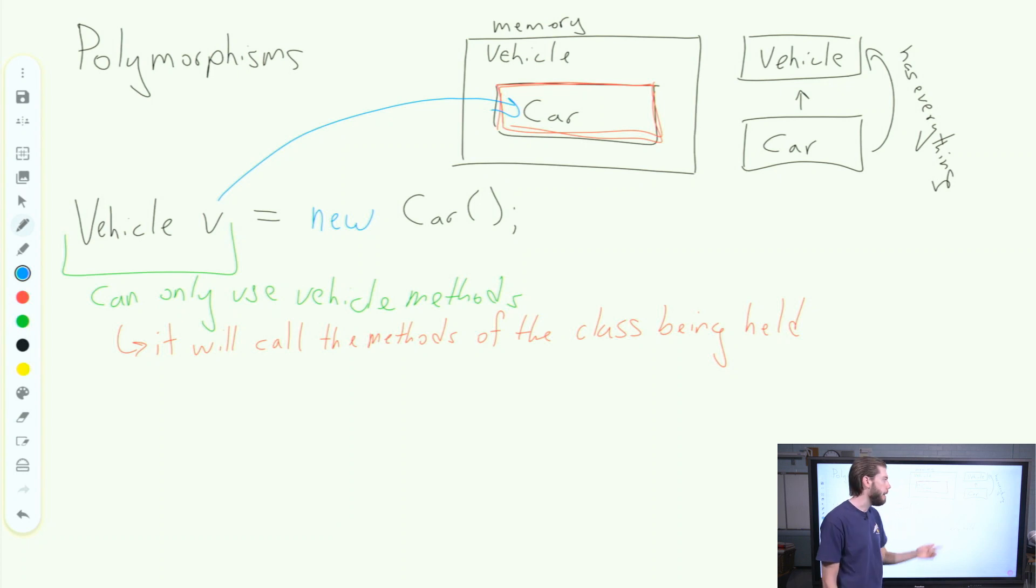the car object will be called, and those methods will be called. And if the car didn't override them, then the vehicle method will be called. So I can only use the vehicle methods that have been declared. But when I call them, it will implement the methods of the class being called.